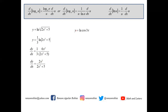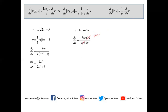Find the derivative of y equals ln(cos 3x). Using the formula du over u, with u equals cos 3x, we get the derivative of cos 3x over cos 3x. The derivative of cos 3x is negative 3 sin 3x, giving negative 3 sin 3x over cos 3x. Since sin 3x over cos 3x equals tan 3x, dy/dx equals negative 3 tan 3x.